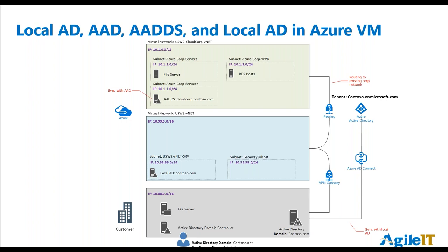One of the things we're working on with customers — and a future tech talk — is: can you really get to a point where you remove local Active Directory altogether, where you don't have it on-prem, don't have it in Azure, and are only doing things through Azure Active Directory, maybe using Azure Active Directory Domain Services for line of business applications? The answer is yes, but there is a process to go through and things to consider. The normal stumbling block is that you have other applications that still need local Active Directory to handle a lot of that.